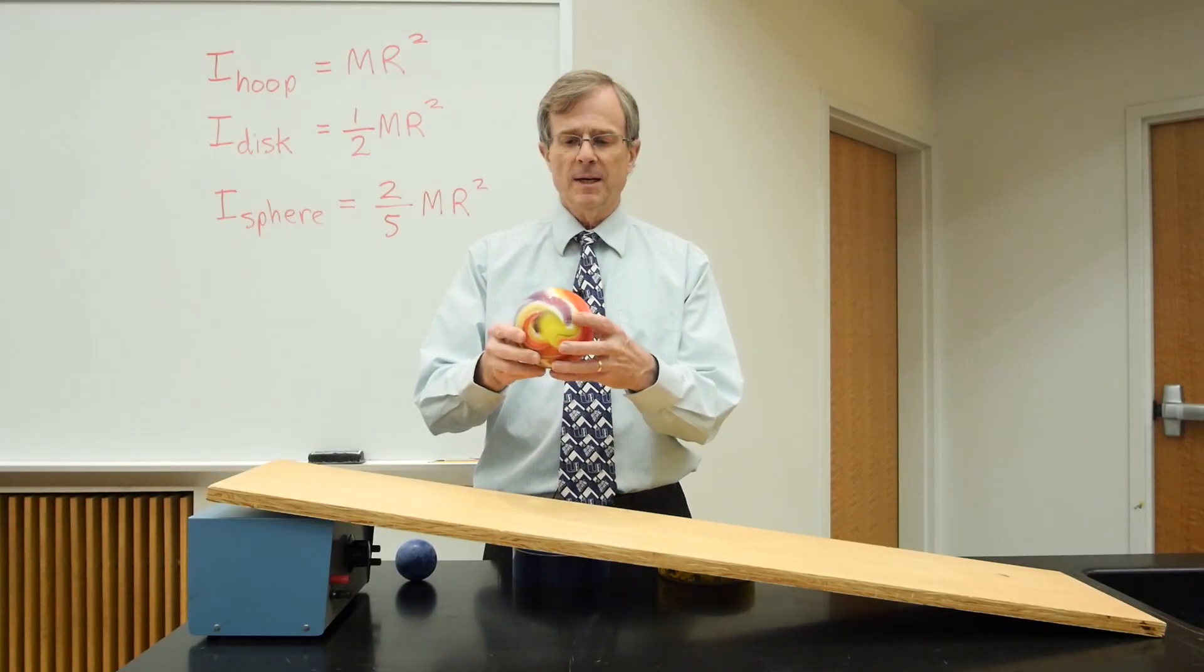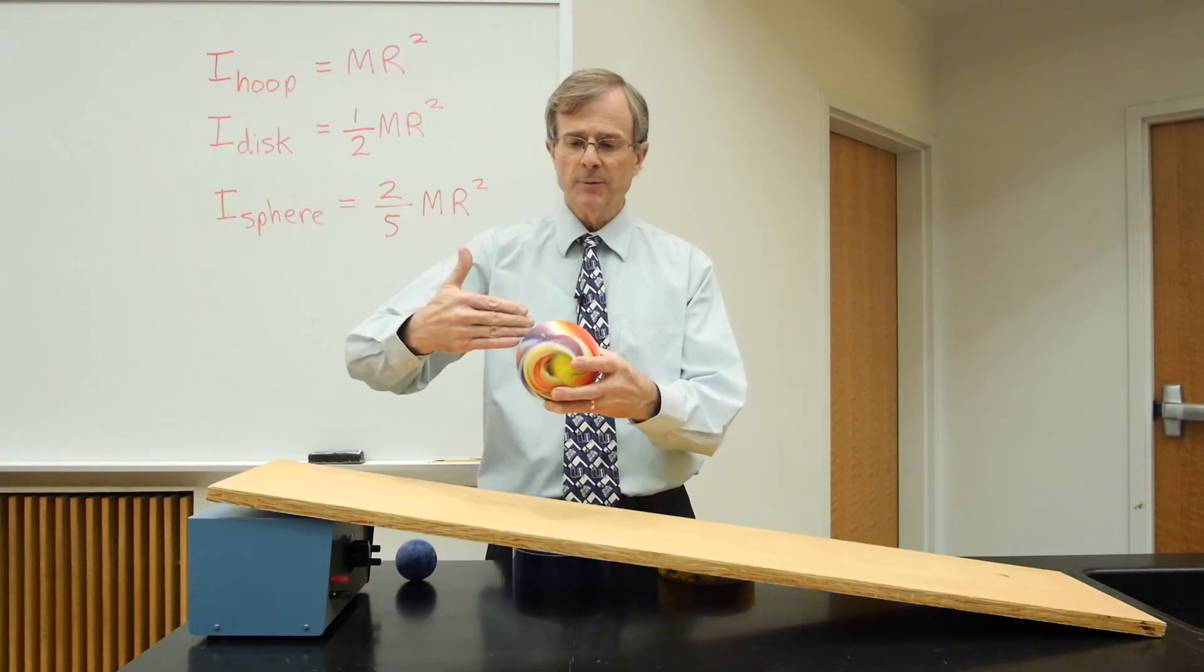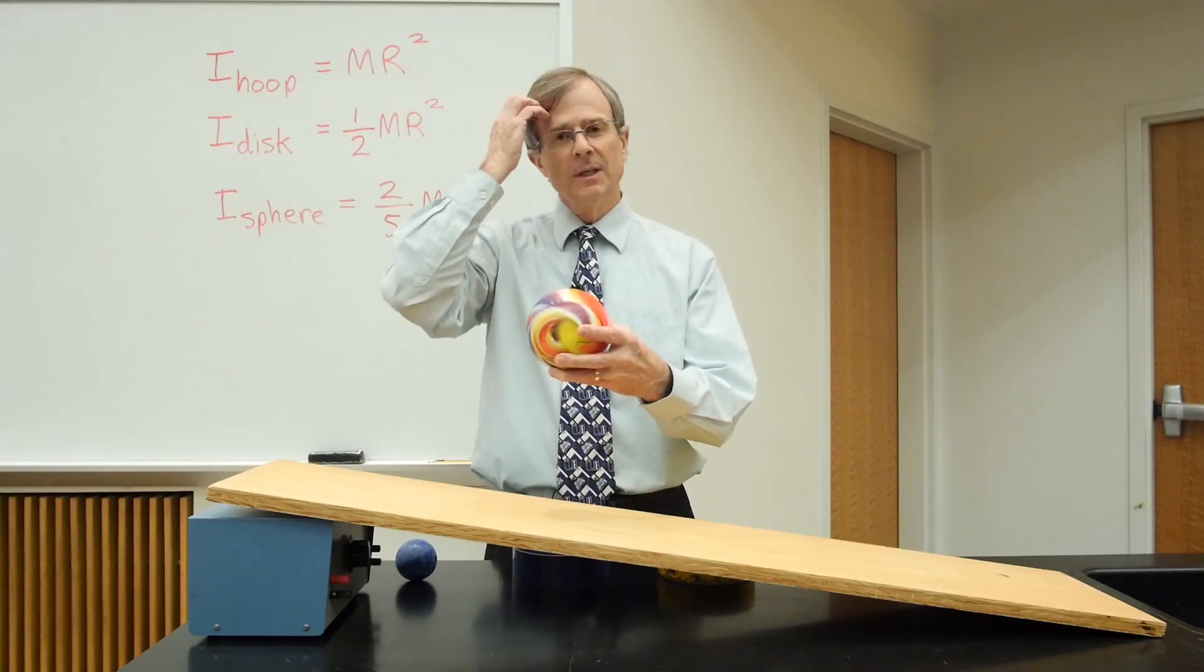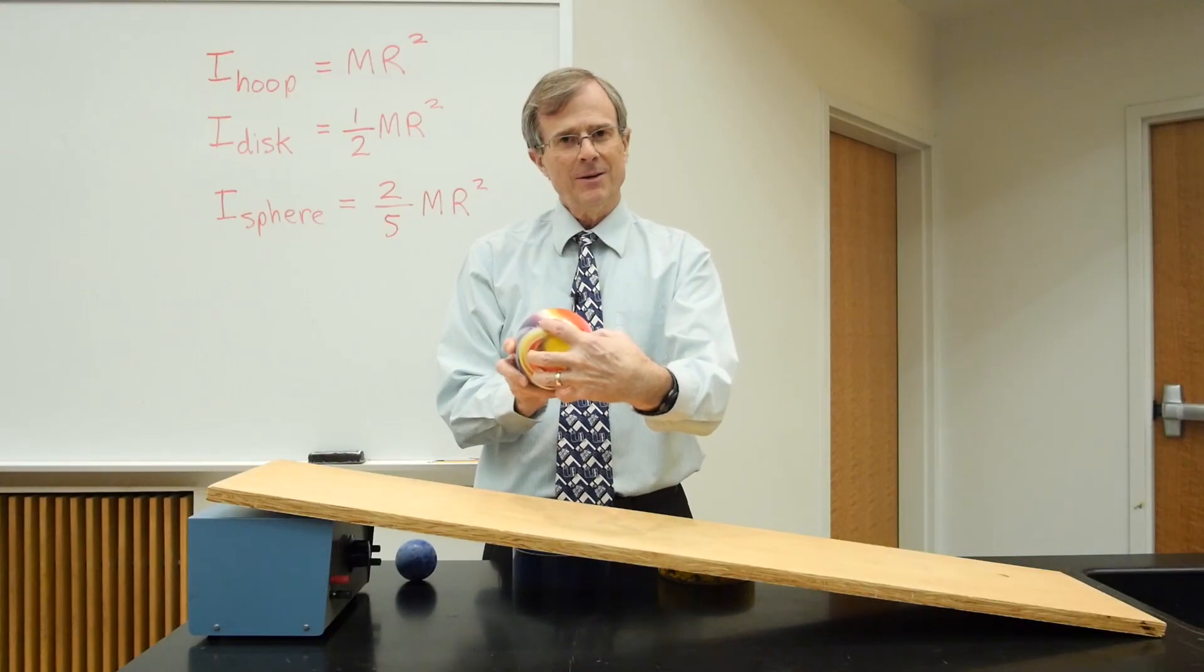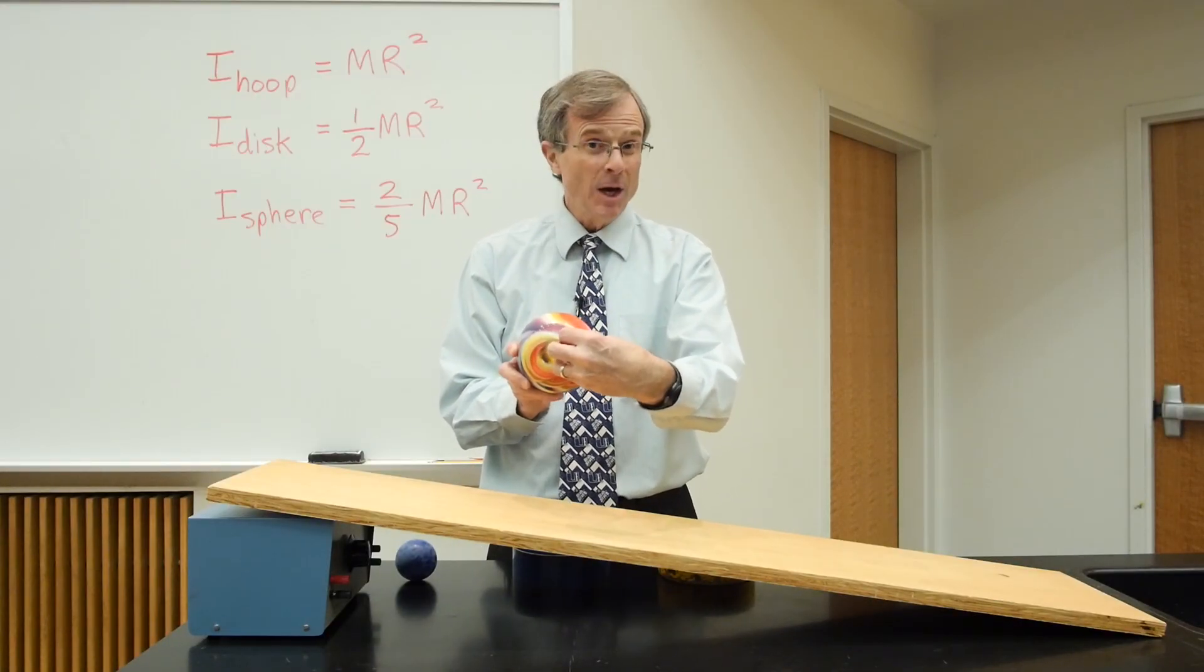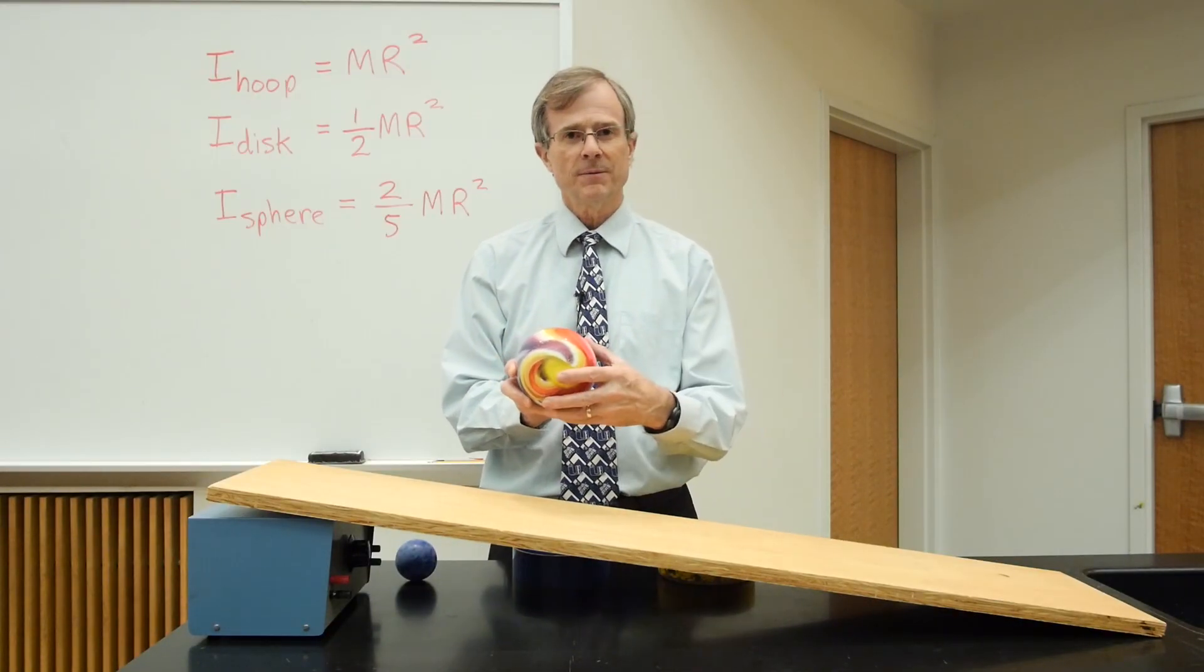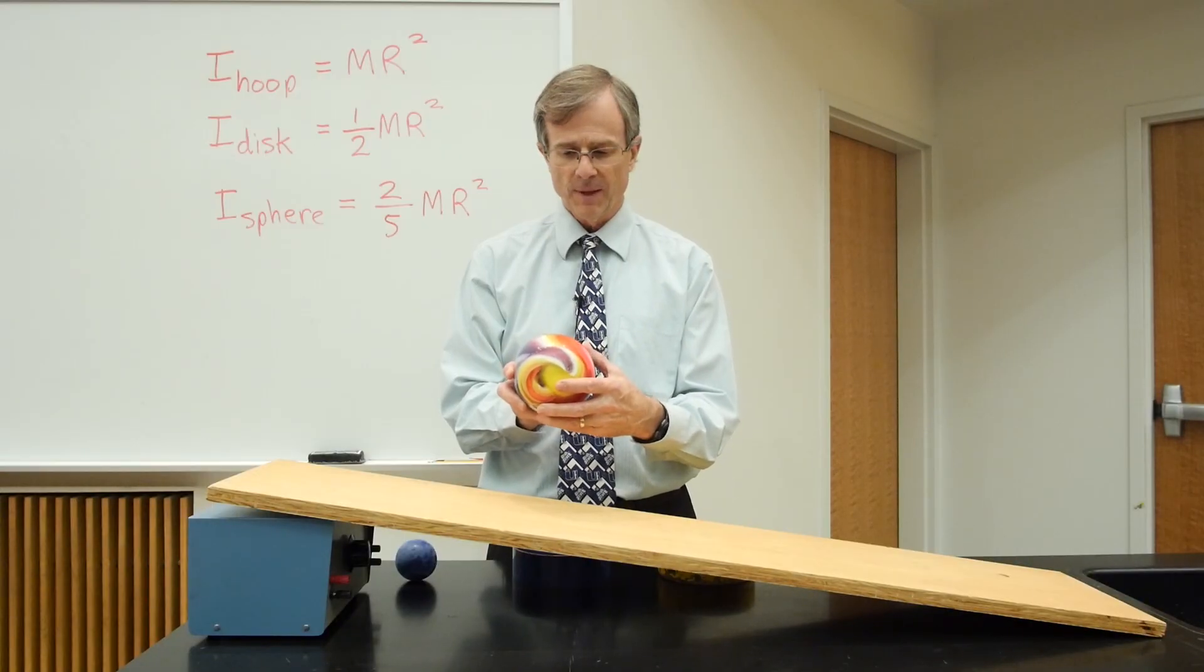The reason is that this would actually look like a disk if we took a slice of the sphere, then it would look like a disk. But the rest of the sphere that you have to add on has its mass concentrated closer to the center of rotation.